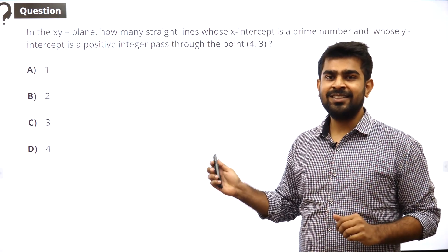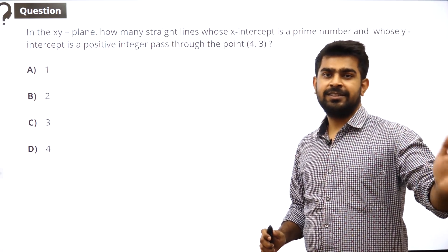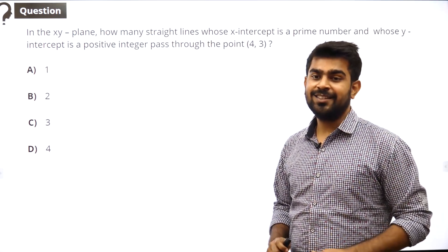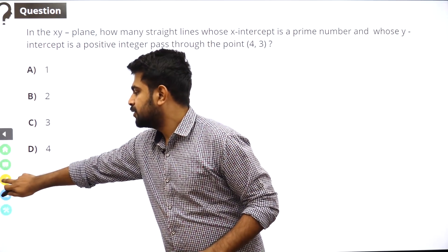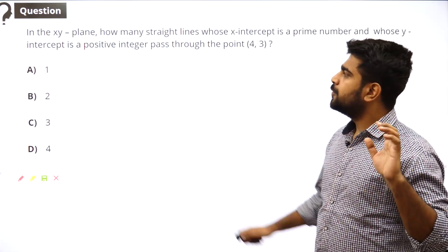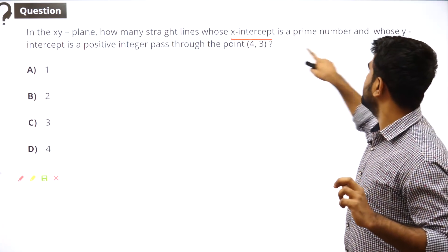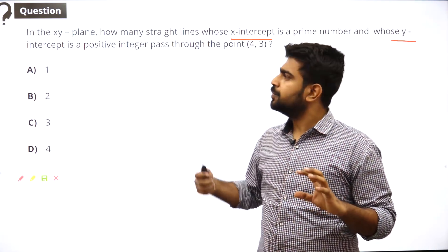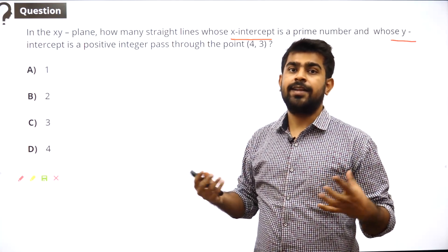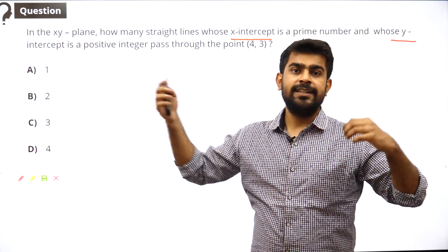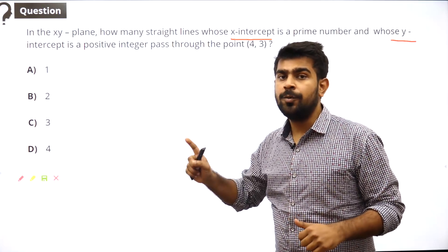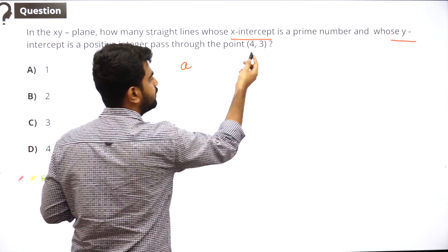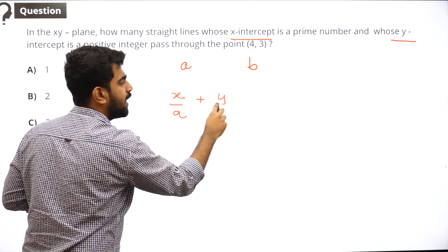This is an easy question. Looking at the intercepts, I am convinced to use the intercept form of the straight line equation. So let's say my x-intercept is a and my y-intercept is b. My equation of the line would be x/a + y/b = 1.